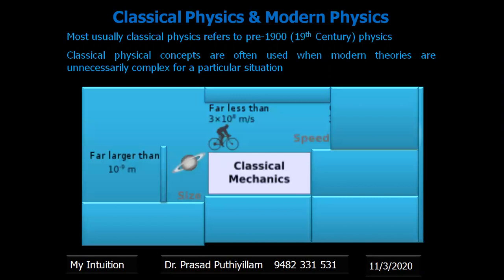Classical physics, also called classical mechanics, is applicable for sizes larger than nano size, that is 10 to the power minus 9 meters, or if the speed of matter is less than the speed of light, which is 3 times 10 to the power 8 meters per second.